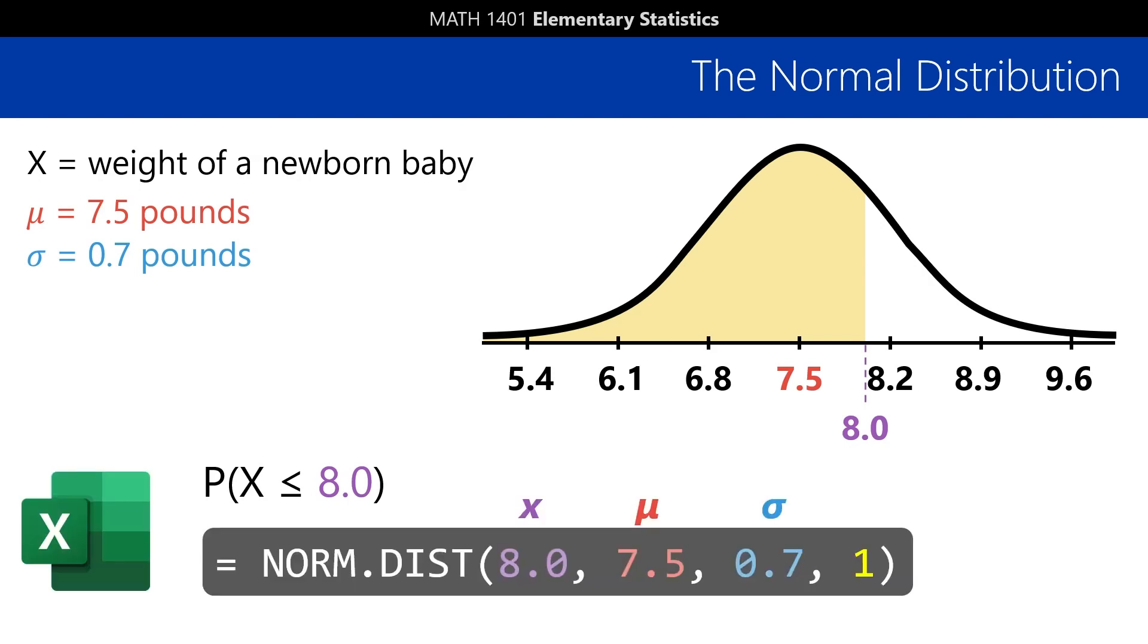In Excel, we just type NORM.DIST, short for normal distribution, followed by our 8 pounds, then the mean of 7.5 pounds, the standard deviation of 0.7 pounds, and finally a 1 to indicate we want a cumulative probability of all the weights up to 8 pounds, just like we did with the binomial distribution earlier.